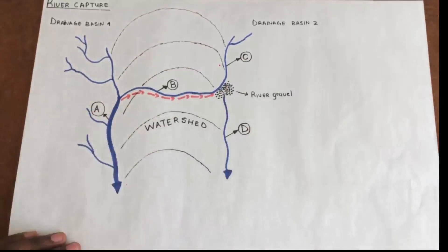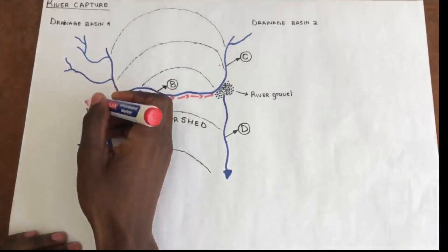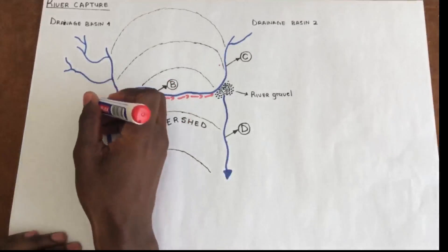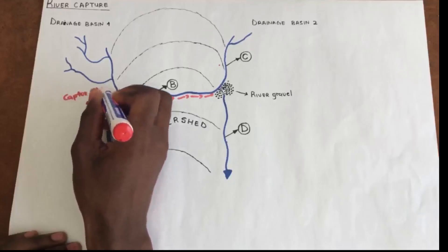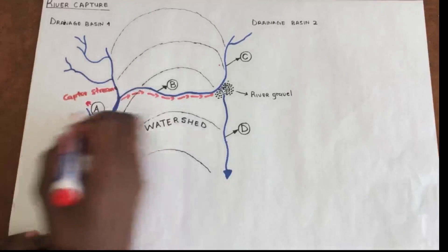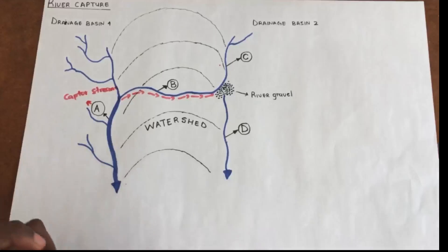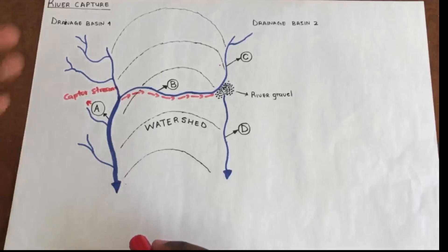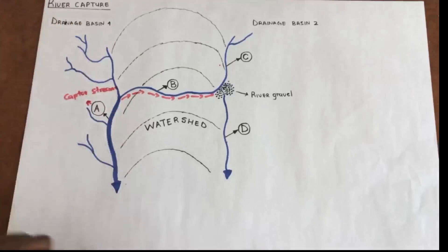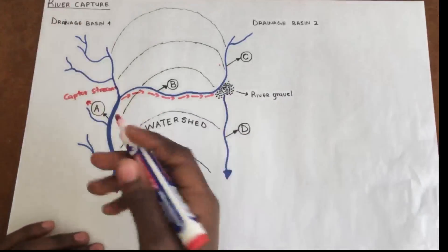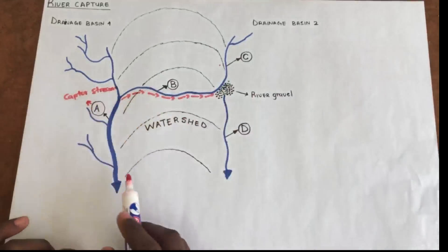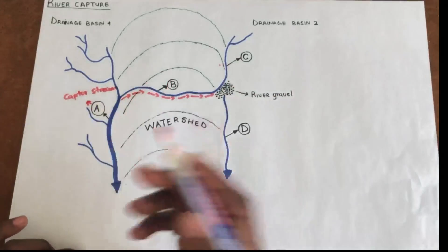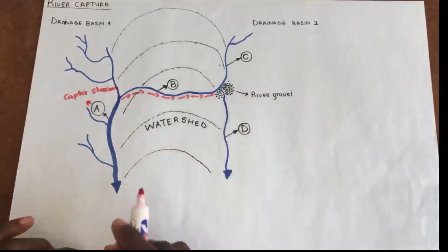If river A is stealing water from the other river, we call river A a capture stream — also known as a captive stream or a pirate stream. River B is also a capture stream because it has emerged from stream A. So if a question paper asks what river B is, the answer is: it is also a capture stream.